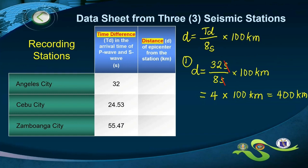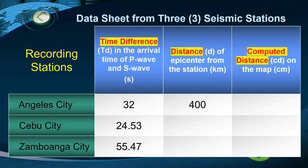Therefore, the 400 kilometers distance tells us that the possible earthquake epicenter is located around 400 kilometers from Angeles City. I'll leave the rest of the calculations for Cebu City and Zamboanga City to you, but here are the answers: Cebu City is 306.67 kilometers, and Zamboanga City is 693.3 kilometers.